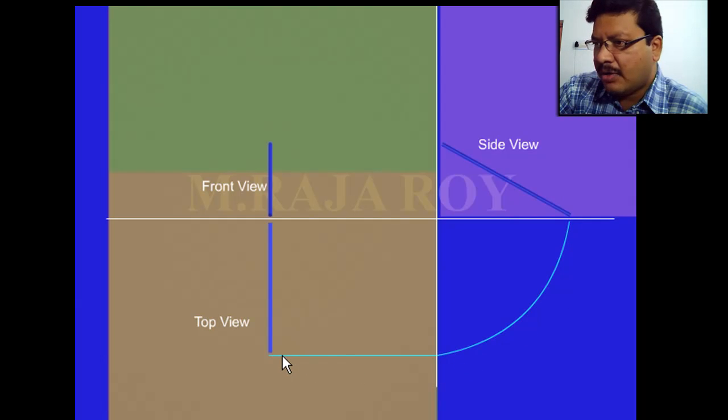From this arc you draw the locus line. And from here that will give the locus of this particular point. And this particular point when you are seeing from the top that will be somewhere here.